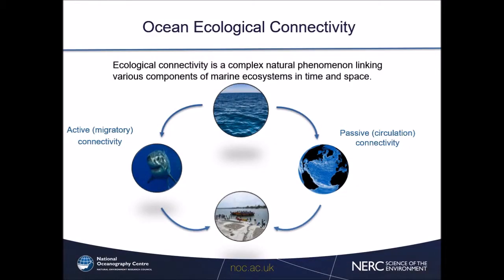Ocean ecological connectivity is a very complex natural phenomenon which links various components of the marine ecosystem in time and space. In our case, we consider linkages between areas beyond national jurisdictions and the coastal zone. Ecological connectivity happens via two main mechanisms: active or migratory connectivity, where lots of marine species migrate via large distances, and also passive connectivity, which spreads ocean larvae around as a nearly passive substance during part of their life stages. This passive connectivity happens via very energetic ocean currents.